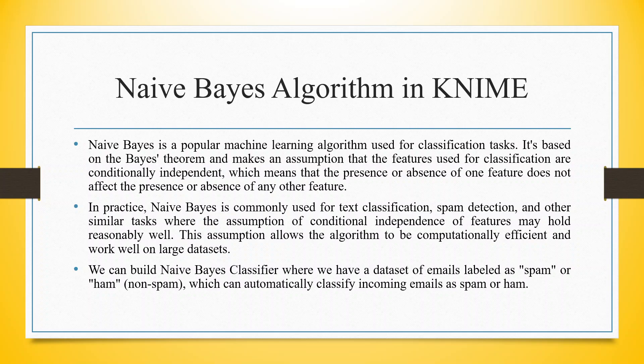Naive Bayes is a popular machine learning algorithm used for classification tasks. Based on the Bayes theorem, it makes an assumption that the features used for classification are conditionally independent. This means that the presence or absence of one feature does not affect the presence or absence of any other feature. In practice, Naive Bayes is commonly used for text classification, spam detection and other similar tasks, and works well on large datasets.